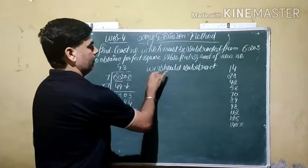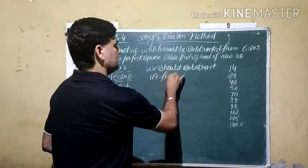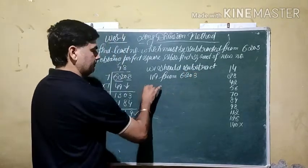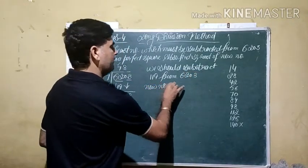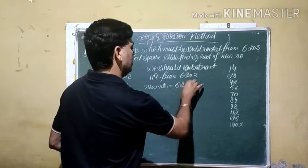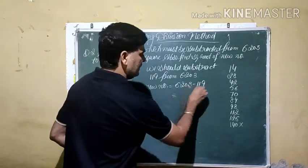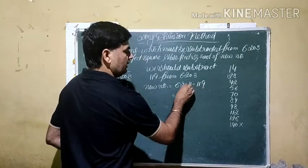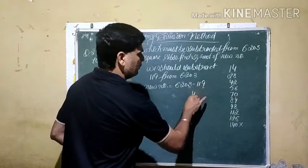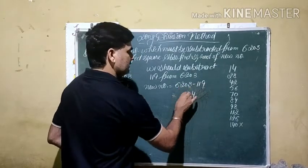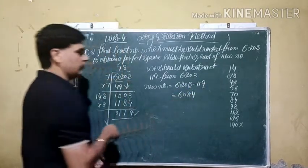119 from 6203. The new number becomes 6203 minus 119. After simplifying, 13 minus 9 becomes 4, 9 minus 1 is 8, 1 minus 1 is 0, giving us 6084. This is the new number.